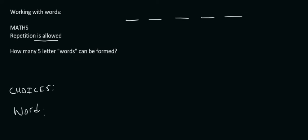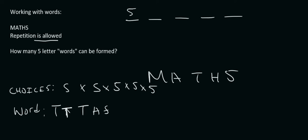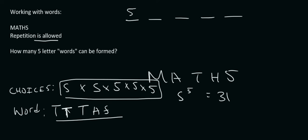Same question now, but repetition is allowed. So for the first letter we have five options. Let's say we chose a T — but now I'm not going to cross the T out, because repetition is allowed. So we still have five options for the next letter, and again five for each subsequent letter. You multiply all of these together, so that's five to the power of five, which gives you 3125.